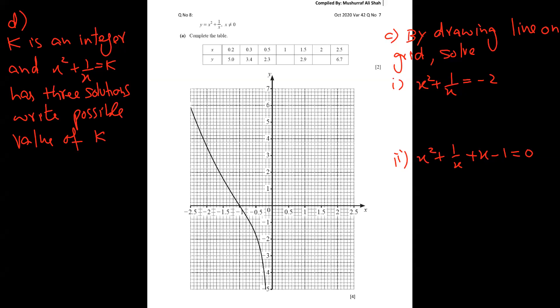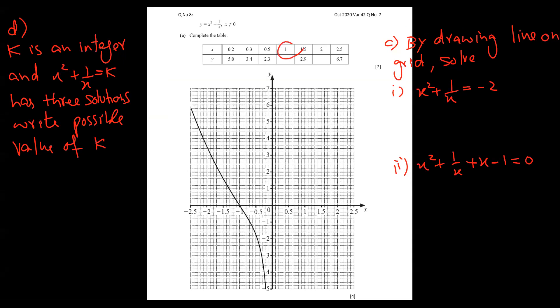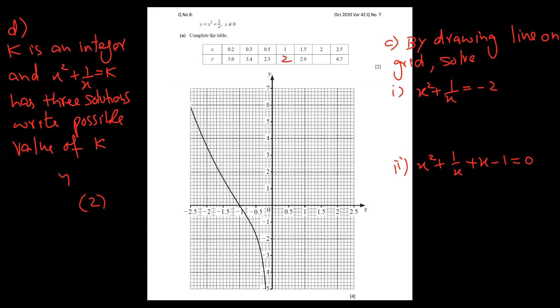This is a question from 2020 October 42 variant. First, fill in the values of the graph function. Plug in x = 1, then plug in x = 2. Some students don't know, so I'll show once: plug in 2 means y = x² + 1/x, so y = 2² + 1/2, which becomes 4 + 0.5 = 4.5.